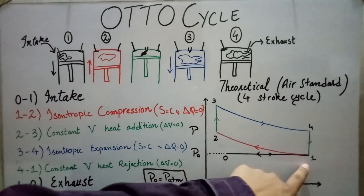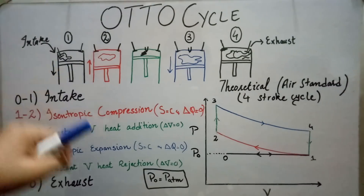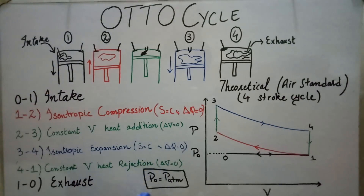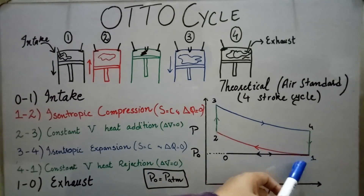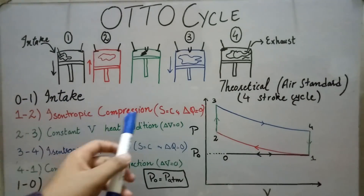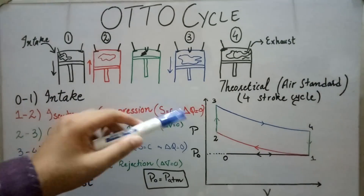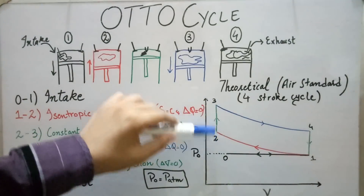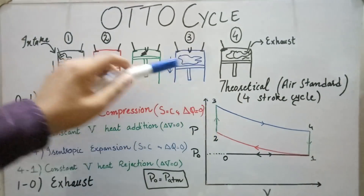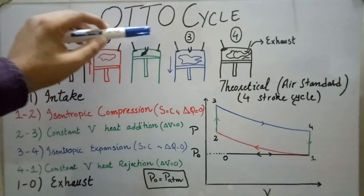Looking at the processes for the theoretical air standard four stroke cycle: from 0 to 1 there is intake of the working fluid at atmospheric pressure, and then from 1 to 2 there is isentropic compression of the working fluid.